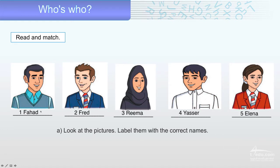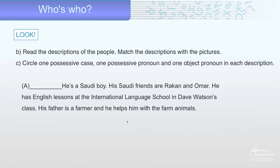Do you remember the names of these people? One is Yasir, this is Rima, and this one is Lena. Now read the descriptions of the people, match each description with the pictures, and circle one possessive case, one possessive pronoun, and one object pronoun in each description.